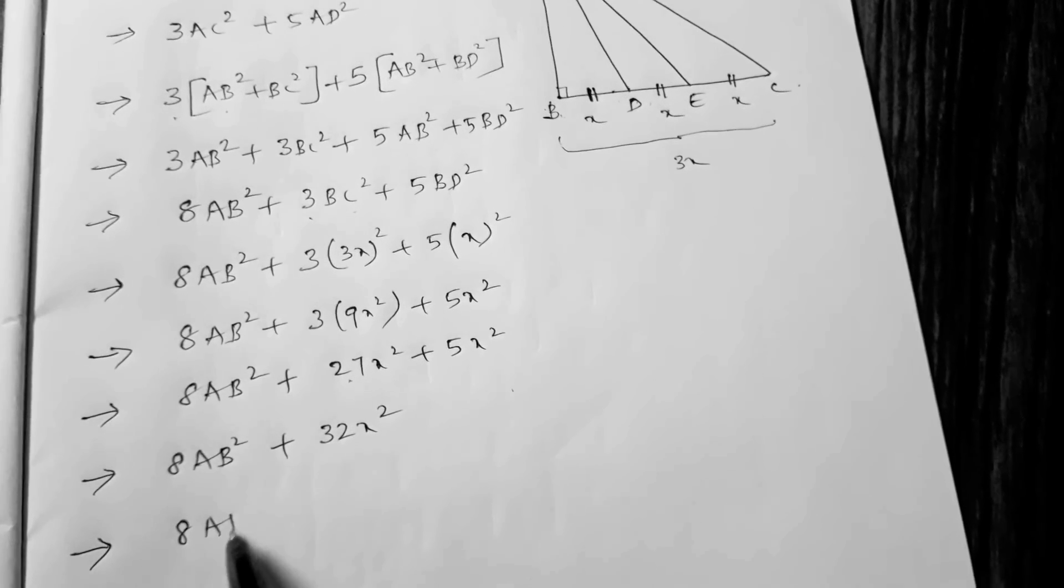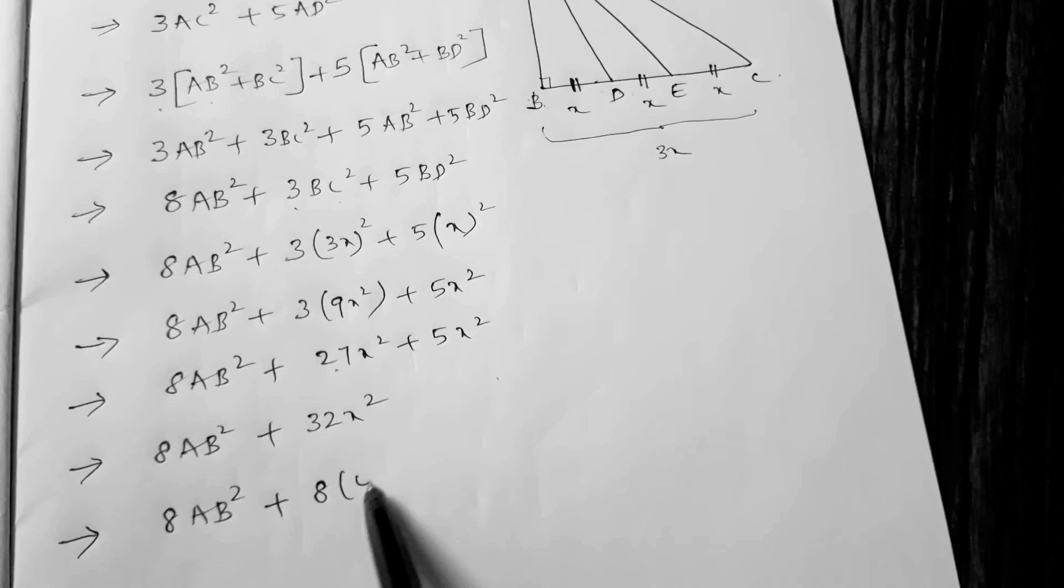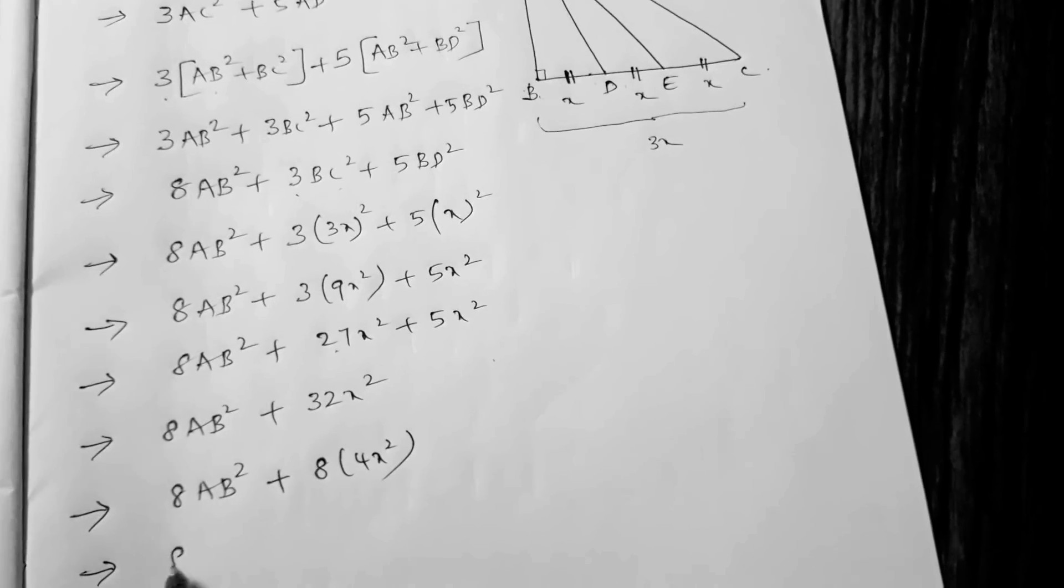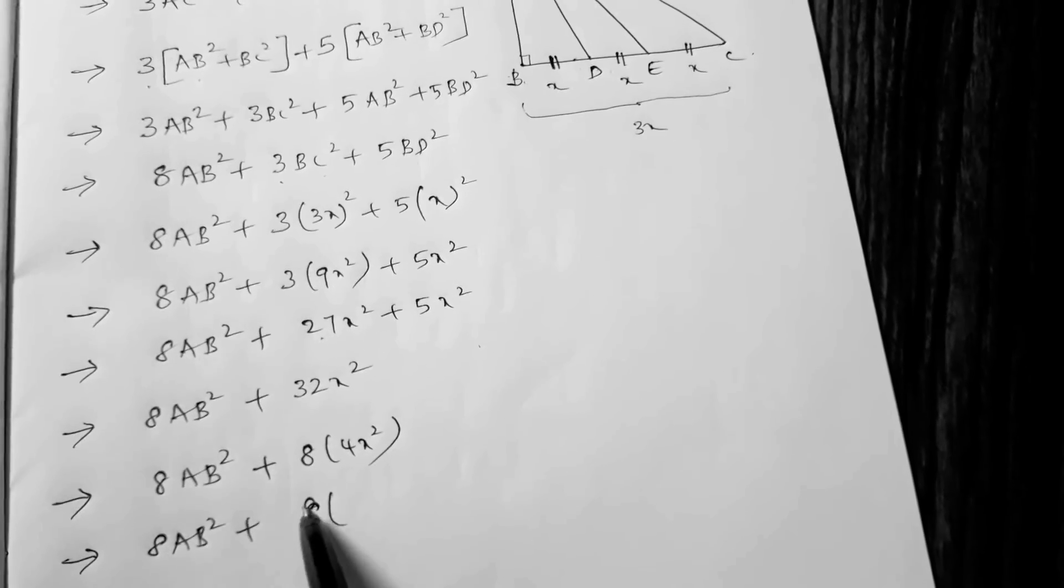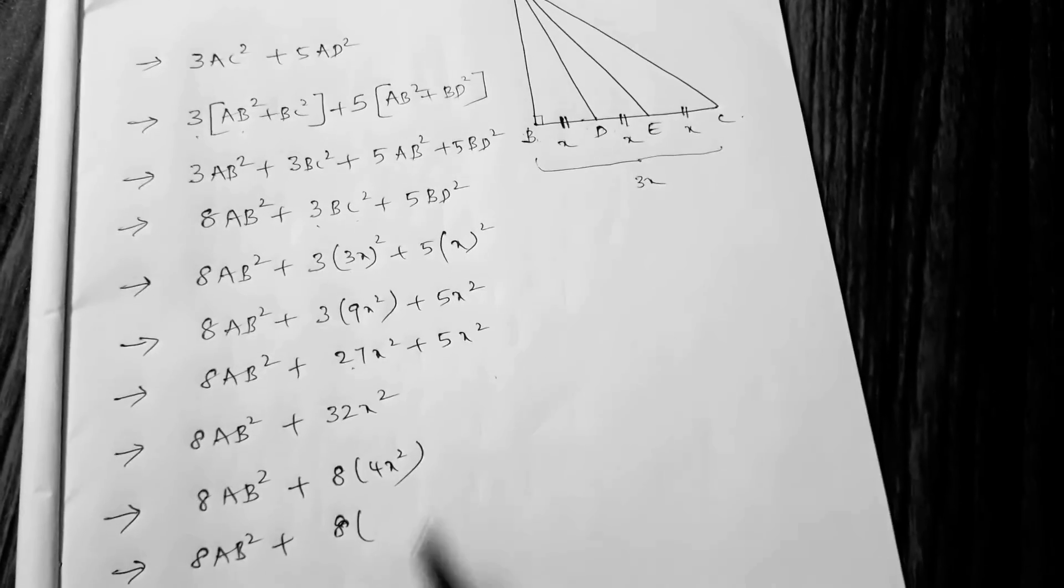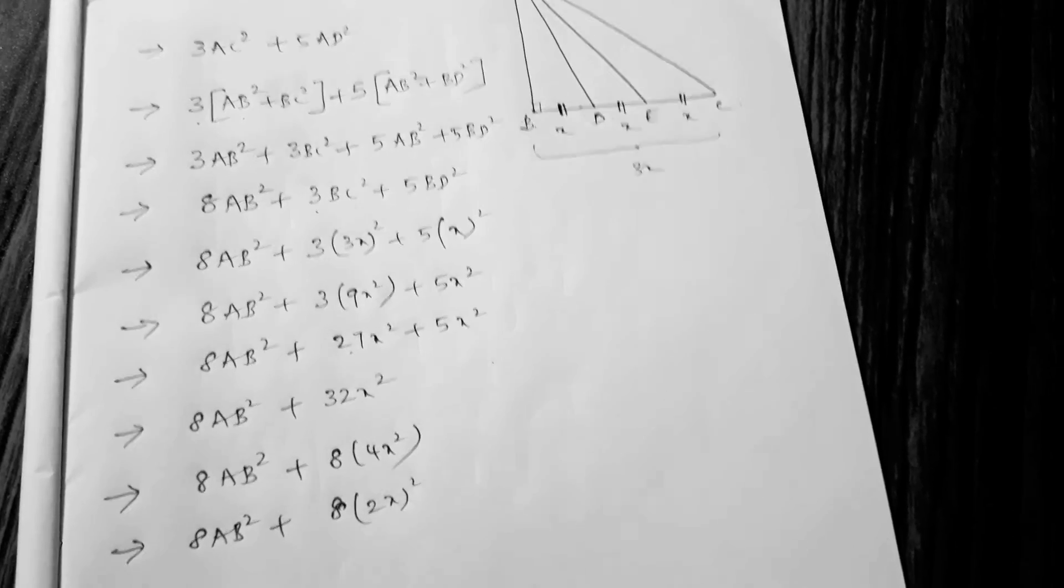32 can be written as 8 times 4X². So 8AB² plus 8 times 4X². Why only 8? Because I need 8AE². Now, 4X² I can write it as (2X)².